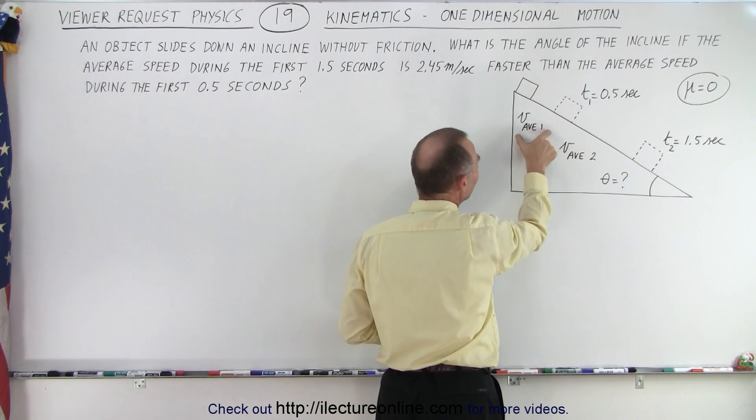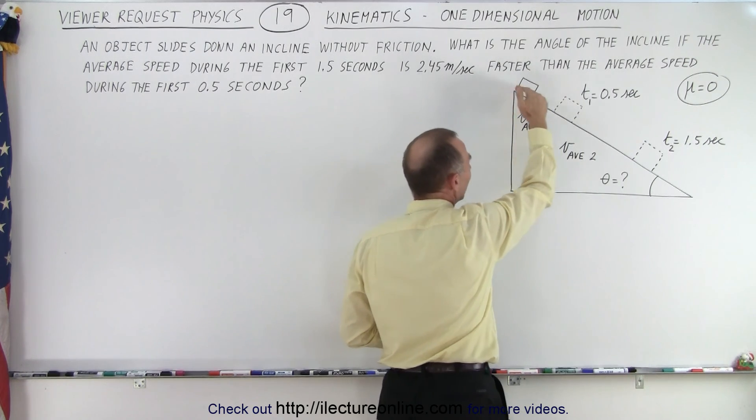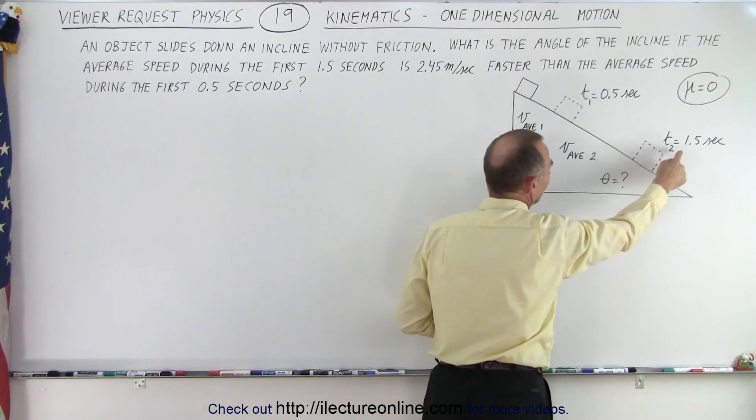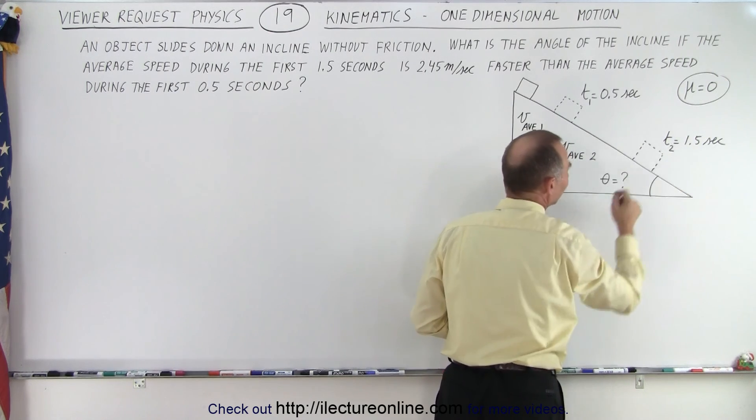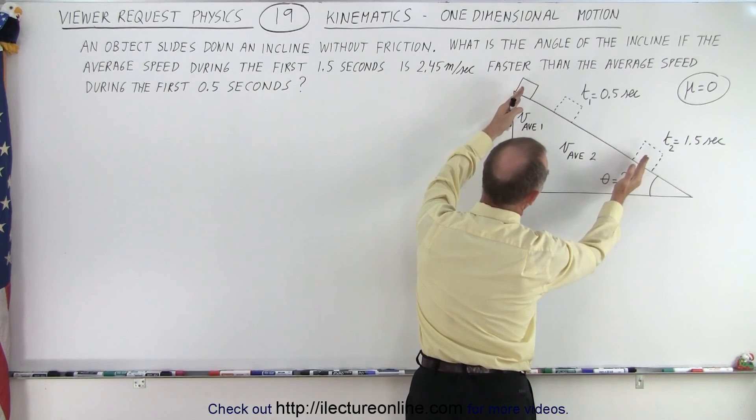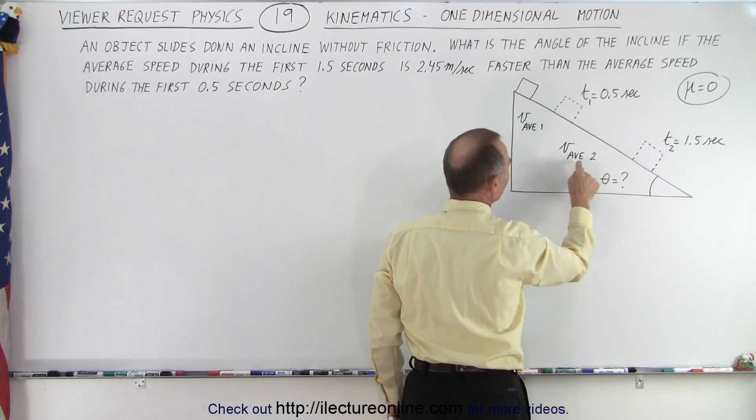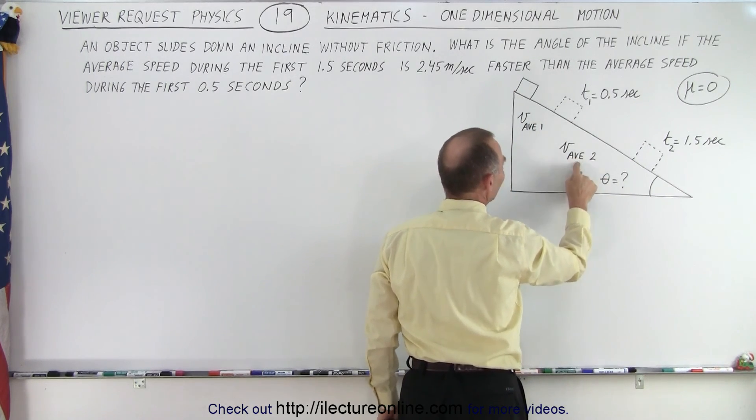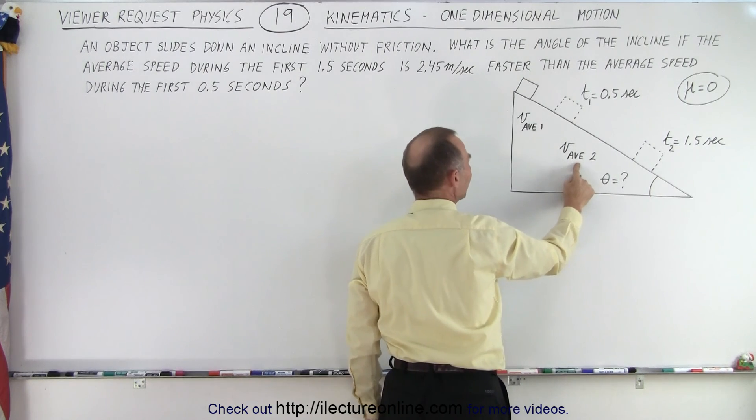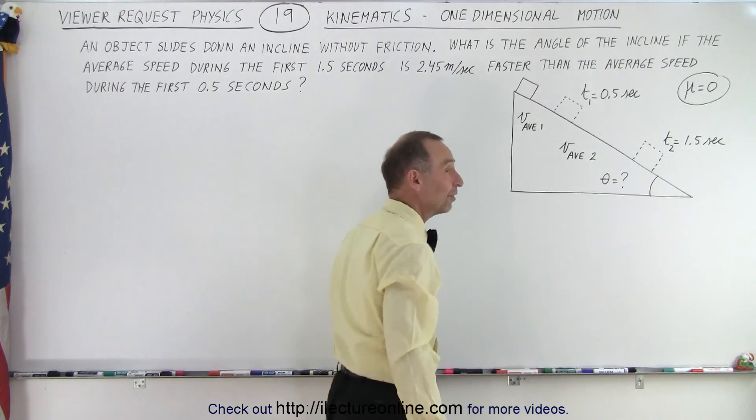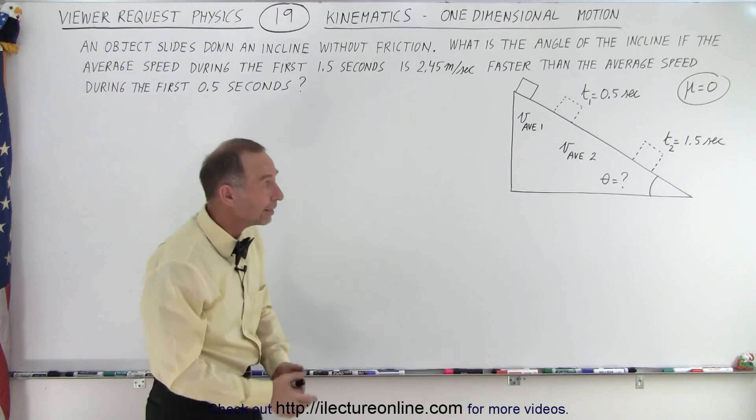If we calculate this average velocity and then we let the object slide to a distance so that 1.5 seconds have elapsed, the average speed of this distance when it travels over this distance would be average 2, and we're told that this average velocity is 2.45 meters faster than this average velocity. So how do we find the incline?